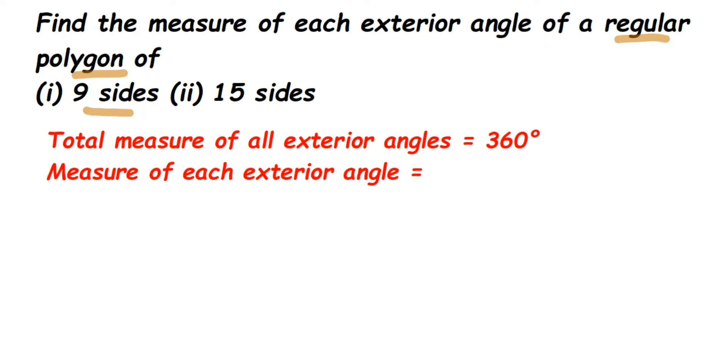So how to find out? We are going to use this property which I have already written. The total measure of exterior angles is 360 degrees. It doesn't matter what type of polygon it is. Whenever you have a triangle or rectangle or any polygon, the exterior angle sum is always equal to 360 degrees.